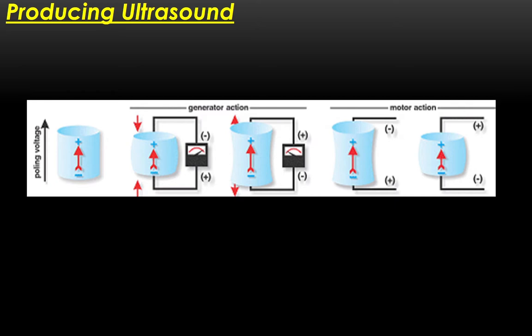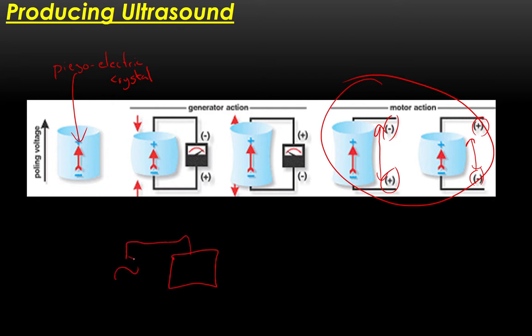So the first thing we're going to think about is how we actually produce ultrasound. Ultrasound is produced by something called a piezoelectric crystal. Now piezoelectric crystals have the nice use that their structure changes when you apply a voltage to them. So we can use the motor action of a piezoelectric crystal, which means that when we apply a voltage in one direction they stretch and get longer. When you apply a voltage in a different direction, they get shorter. So what that means is, if I have a piezoelectric crystal here and I connect it to an alternating current generator, then that's going to vibrate backwards and forwards and so produce waves, in this case sound waves.